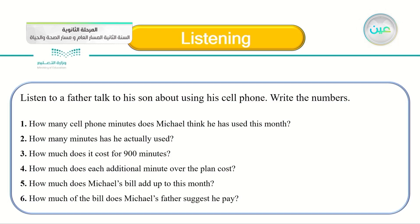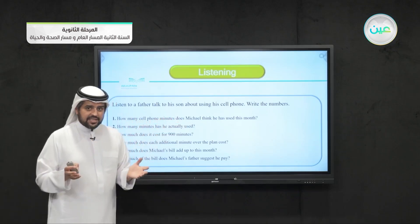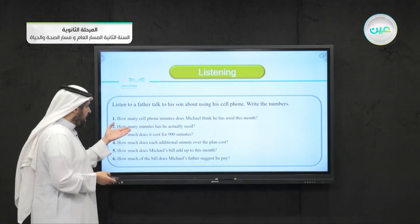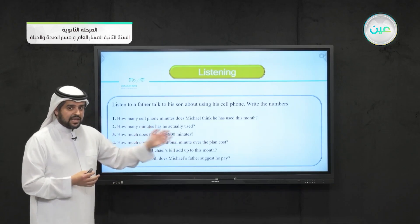Listen to a father talk to his son about using his cell phone. Write the numbers — each and every answer here is a number, so focus on numbers while listening. The first question: how many cell phone minutes does Michael think he has used this month? The second question: how many minutes has he actually used? The answer, again, is a number.